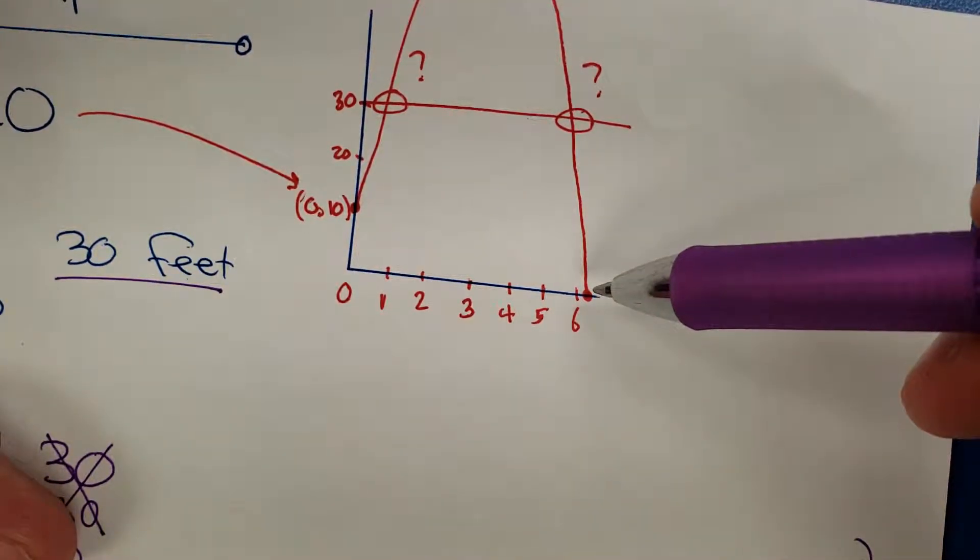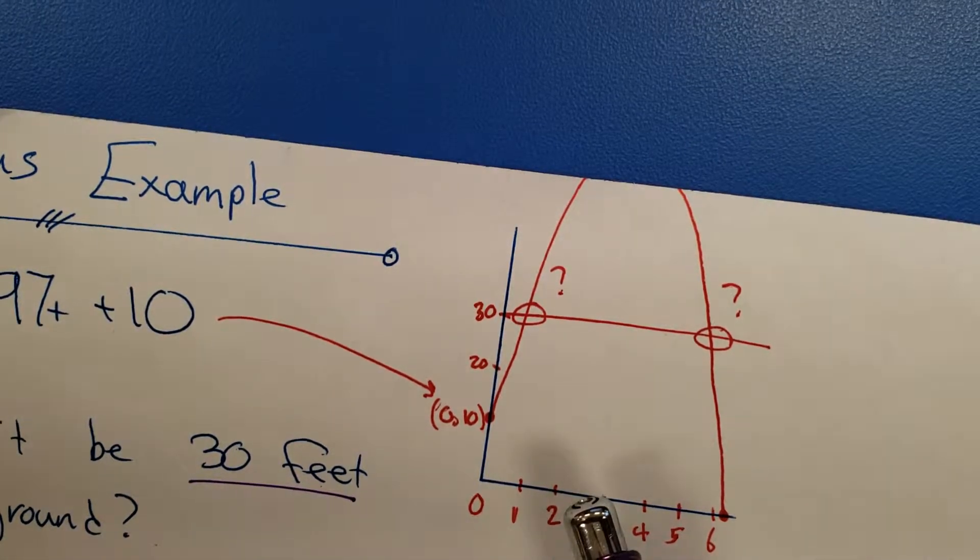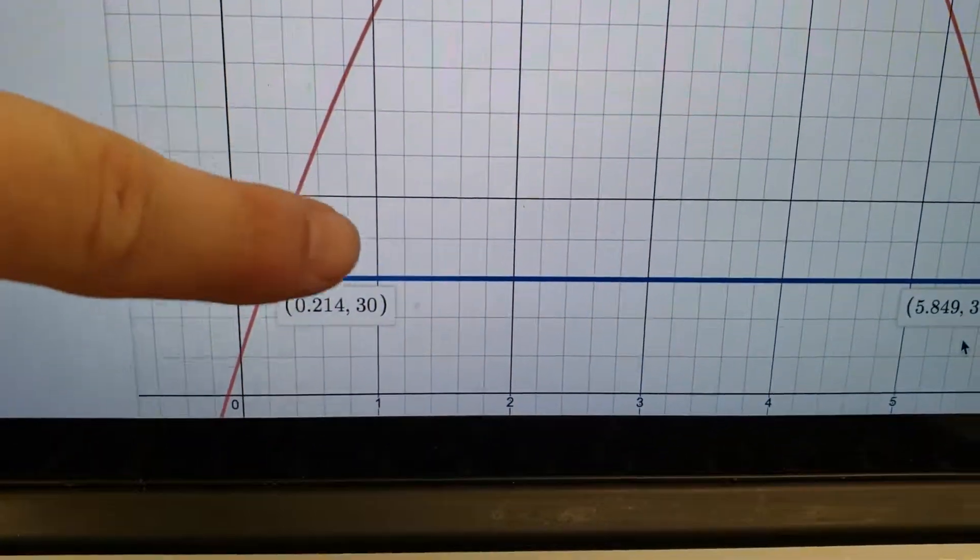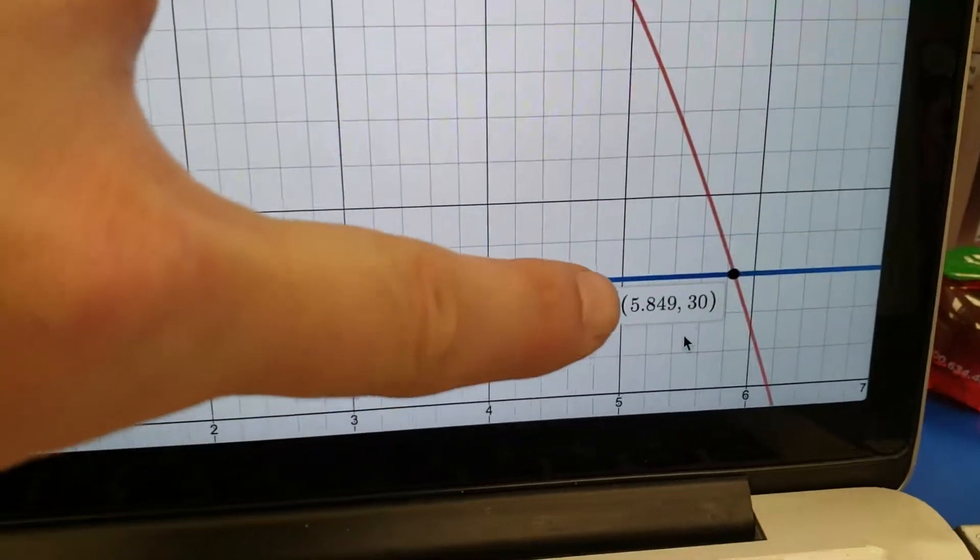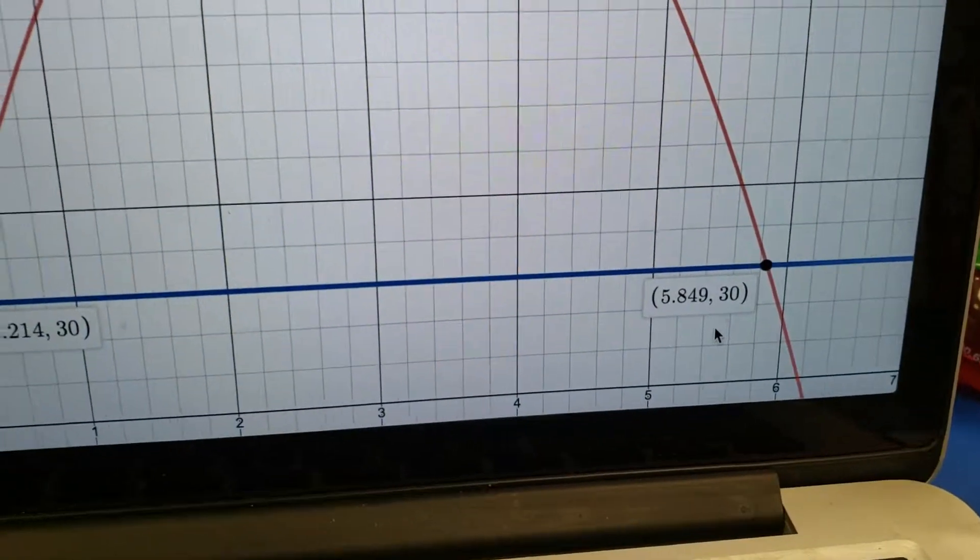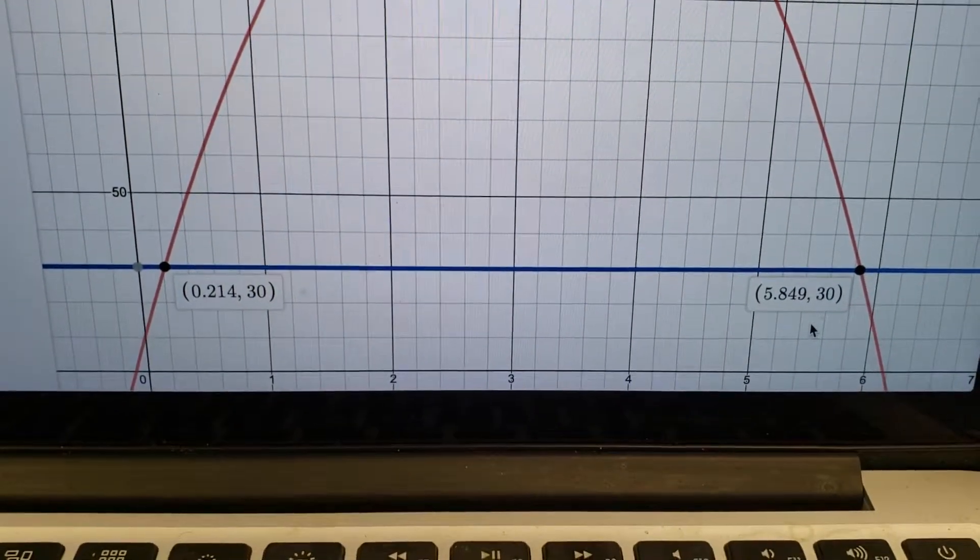Now, where did I get this sketch from? Well, I'm glad you asked that. I went ahead and graphed this to make sure it works. And looky here, friends. Hey, look. There's our 0.21. It rounded the third decimal. And then, hey, there's our 5.85 rounded to the second decimal. Look at that. Beautiful, right? Look at that. We found both those numbers by hand.